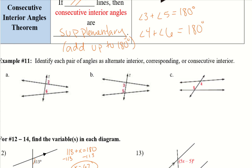Take a look at A, B, and C and try to identify each pair as alternate interior, corresponding, or consecutive interior. A is corresponding — they're on the same side of the transversal on the top of each line where the transversal meets. B is on the inside and on the same side, so it's consecutive interior. C is on the inside of my parallel lines and across from one another, so it's alternate interior.